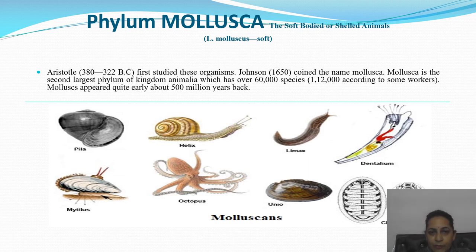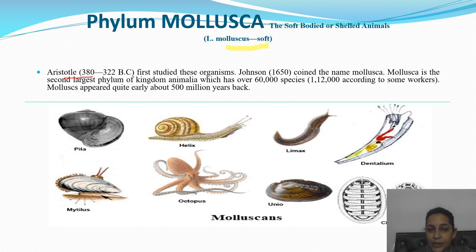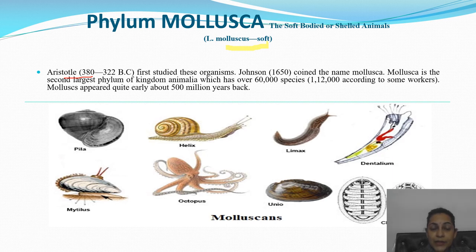Phylum Mollusca. Mollusca means soft — the soft-bodied or shelled animals. First of all, Aristotle studied these organisms. Johnston coined the name Mollusca. Mollusca is the second largest phylum of kingdom Animalia, which has over 60,000 species. According to some workers, the number is 1,12,000. Molluscas appeared quite early, about 500 million years back.